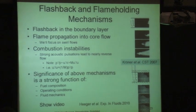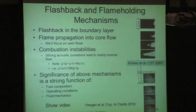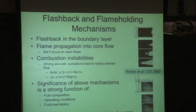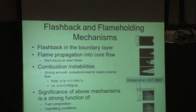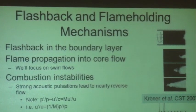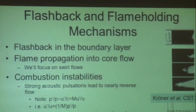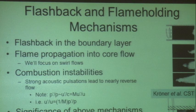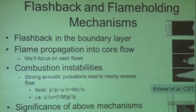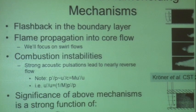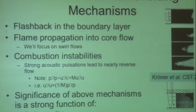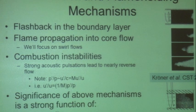What makes this problem more interesting is that there's not one mechanism of flashback — there are multiple. You can have boundary-layer flashback, where the boundary layer is a low-velocity region, or flashback into the core flow. For core flow flashback, we'll specifically focus on swirling flows, where the flow has an azimuthal component. As soon as you introduce swirl, new physics arise. A flow with an average velocity of 70 meters per second can still have a flame propagating upstream — I'll explain why a little later.